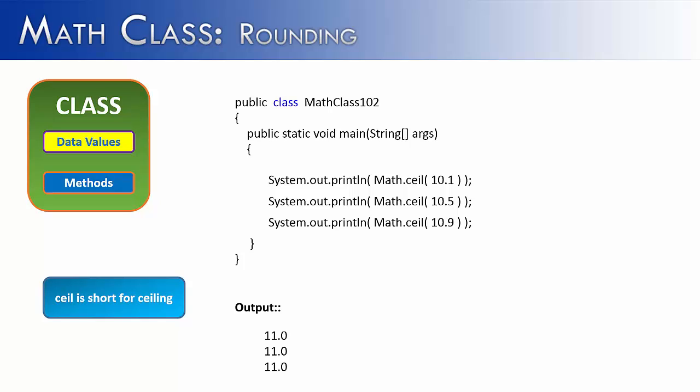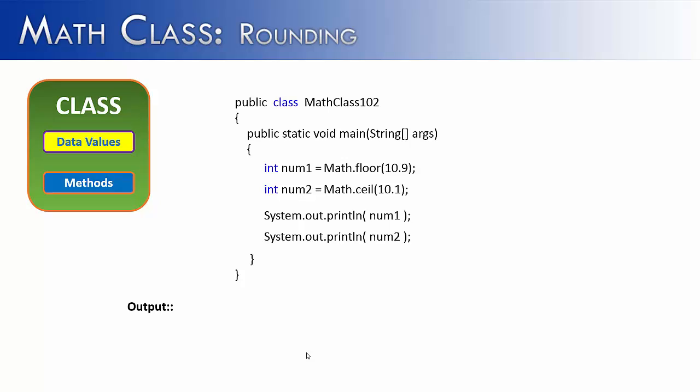Let's see why this is important. Here I have floor and ceil being used, and I'm storing them as integer values. If you try to run this program right now, you would get an error. The reason is, as we've just seen in the two previous examples, Math.floor and Math.ceil return double values.